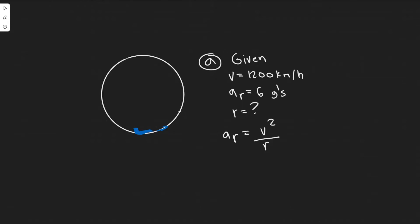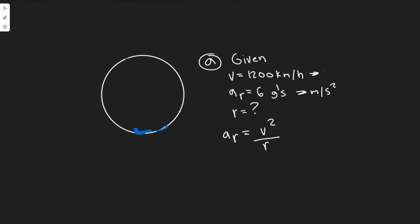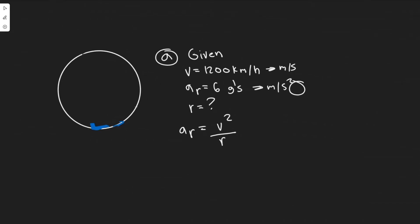To find the minimum radius, we need the centripetal acceleration and the velocity. We must make sure the units are correct — converting g's into meters per second squared and velocity into meters per second. Since 1g equals 9.8 meters per second squared, we do 6 times 9.8, which gives us 58.8 meters per second squared for our centripetal acceleration.